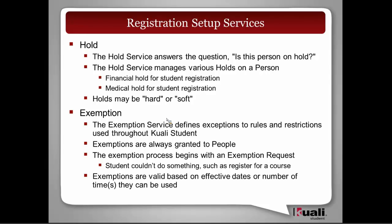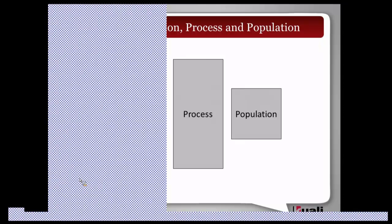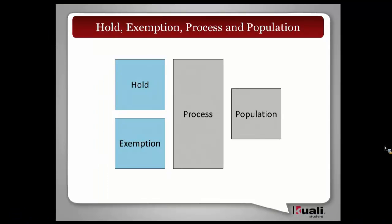Moving on, Cathy is going to talk about services as they relate to setting up the registration environment, holds, and exemptions. Then Christina will go through the application map again — it's a really good tool for understanding where all this functionality falls. Then there will be an orientation to the location and structure of business artifacts and other supporting materials for those doing self-studies, and then we'll wrap up.